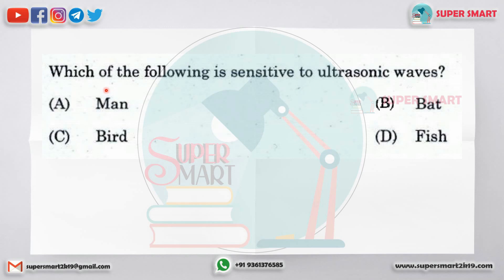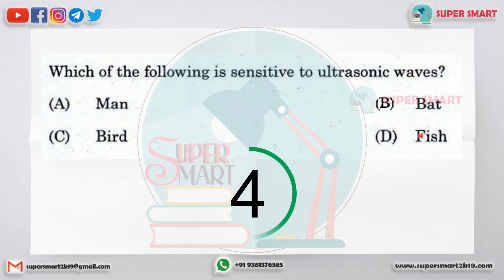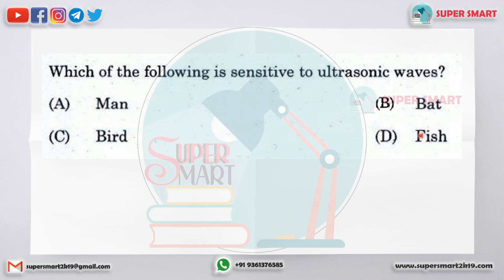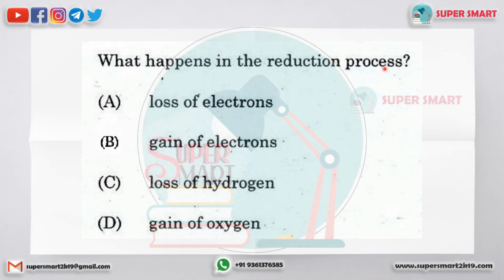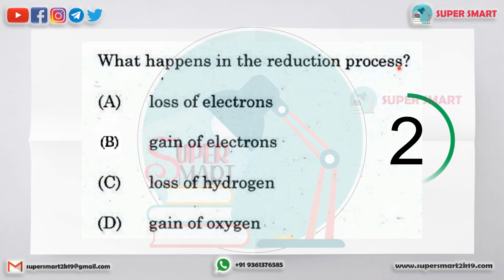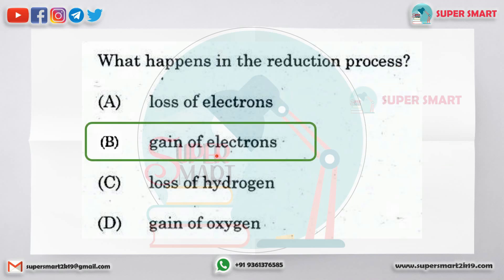Which of the following is sensitive to ultrasonic waves? Ultrasonic waves are sensitive, and the answer is BAT. Next question: what happens in the reduction process? What do we need — electron gain, loss, or hydrogen gain? The answer is electron gain.